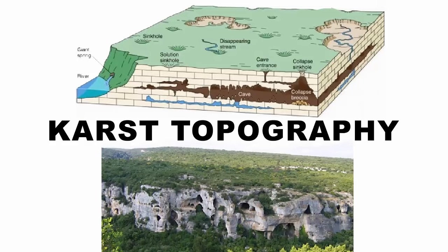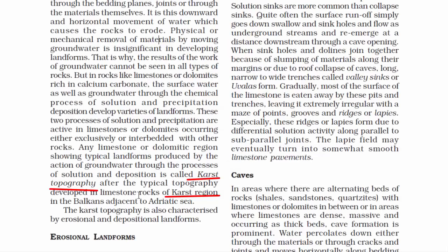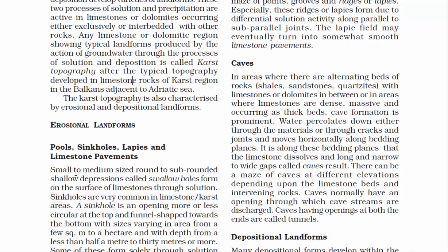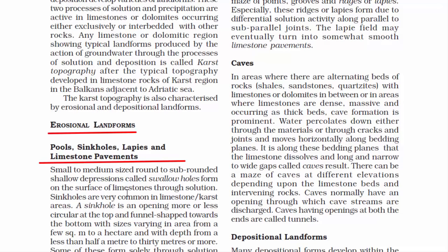These formations are also known as karst topography. Now we will read about different types of erosional landforms that exist due to groundwater. The first category includes pools, sinkholes, lapies and limestone pavements.